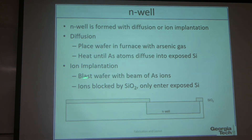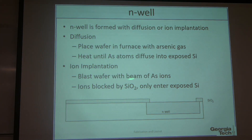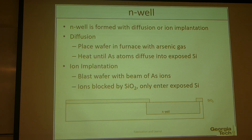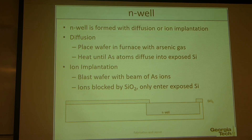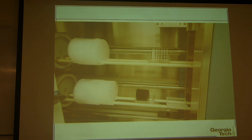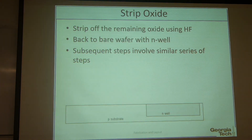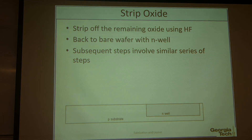For ion implantation, we blast the wafer with beams of arsenic ions. These ions are blocked by the remaining silicon dioxide, so we can have an N-well junction in the pre-designed area. This is a photo from the Marcos cleanroom showing the diffusion furnace. Then we strip off the remaining oxide using HF again, and we are back to the bare wafer.